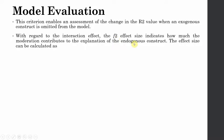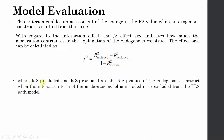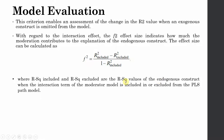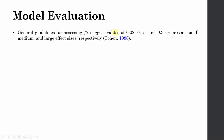The formula for F-square effect size is: (R-square included minus R-square excluded) divided by (1 minus R-square included), where R-square included means with the inclusion of the moderating effect and R-square excluded means without it. This allows you to assess the relevance of the moderating effect. General guidelines suggest values of 0.02, 0.15, and 0.35 for small, medium, and large effect sizes, as suggested by Cohen in 1988.